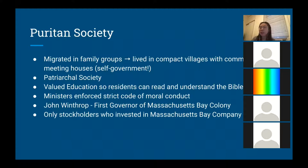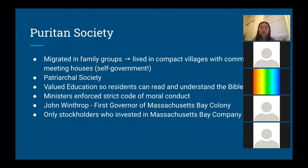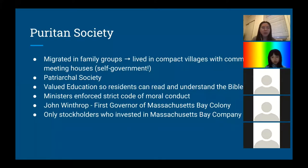Puritan society was different from Chesapeake society — many migrated in family groups rather than as single men. They lived in compact villages with community meeting houses, reflecting the idea of self-government. It was a very patriarchal society, with the male as the head of the household. They valued education so residents could read and understand the Bible. The most famous figure of Puritan society is John Winthrop, the first governor of Massachusetts Bay Colony, who gave sermon-like speeches to large crowds. Only stockholders who invested in Massachusetts Bay Colony could vote, and they were usually male.